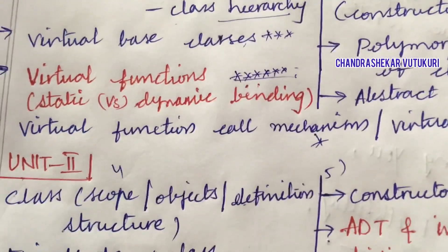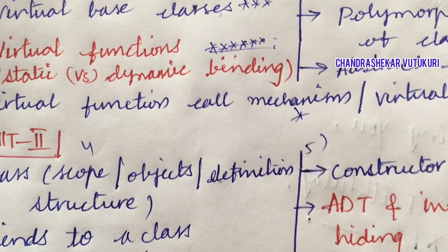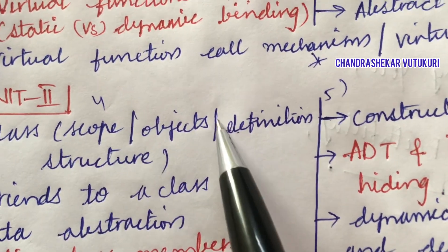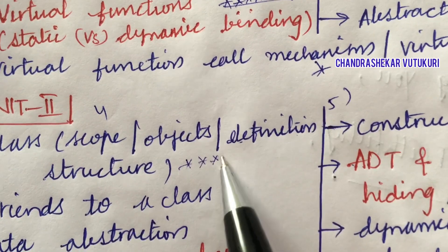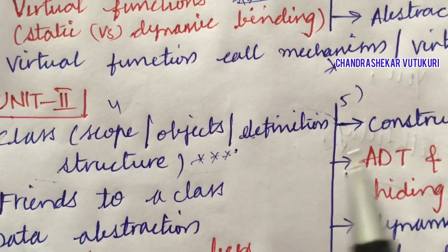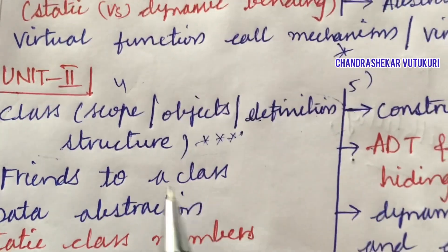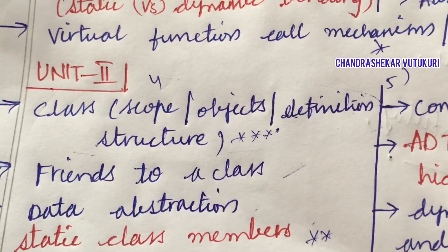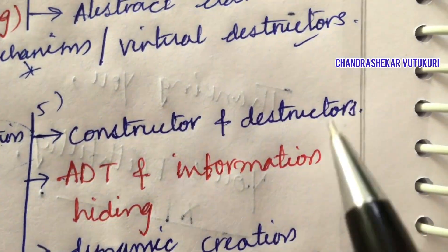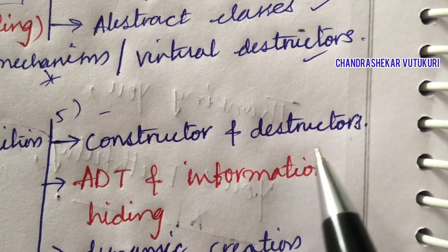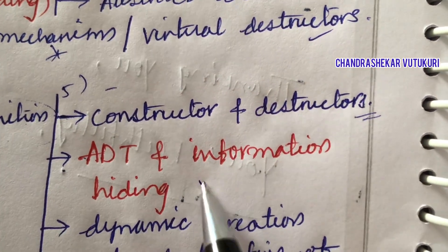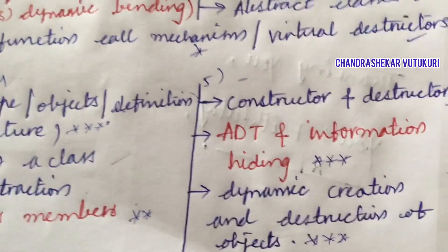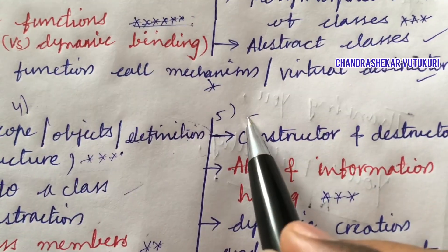Question numbers 4 and 5 cover Unit 2. Define the term class, its scope, objects, definition, and structure — this may be part of a long or short question. You need to be thorough with the complete unit. Friends to a class along with programs, data abstraction, and static member class need to be worked out, including examples and programs. Constructors and destructors and their differences, ADT and information hiding are topmost questions. Dynamic creation and destruction of objects is also very important, coming under questions 4 and 5 in an A/B split.